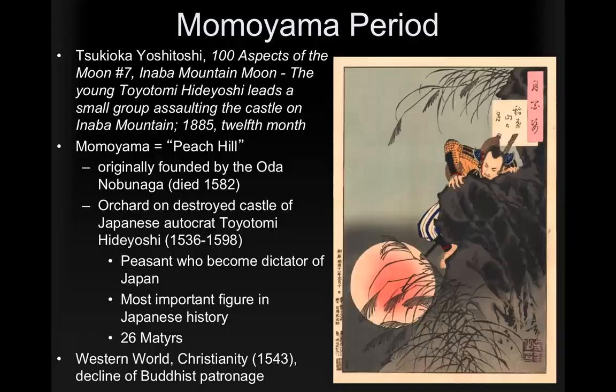The Momoyama period is a very short period but considered by some Japanese historians to be the most important in the development of what would eventually become modern Japan. Momoyama means Peach Hill. It was originally founded by Oda Nobunaga, who dies in 1582 and is replaced by someone far more important. It's an orchard on the destroyed castle of the Japanese autocrat Toyotomi Hideyoshi — a peasant who became a shogun, a dictator of Japan, and one of the most important figures in Japanese history.